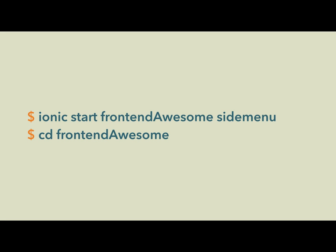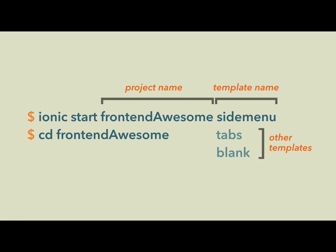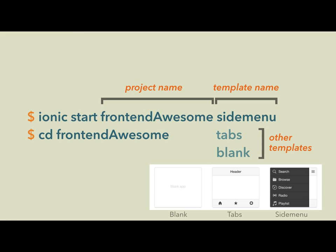Once Cordova and Ionic are installed, you can create a project using `ionic start`. This clones one of their default project templates into a directory you name. Pass in a project name and a template — options are `blank`, `tabs` (like Instagram with a header and tabs at the bottom), or `sidemenu` (which slides a list in from the left or right). Then `cd` into that directory and the framework is ready.